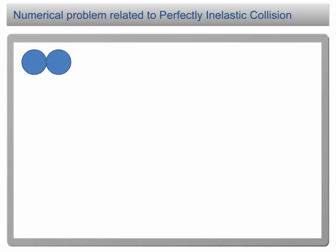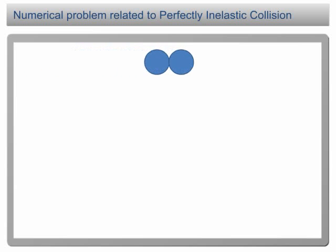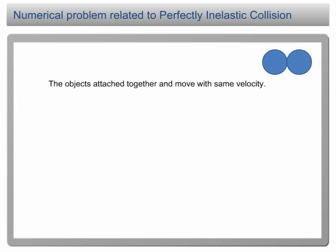Numerical problem related to perfectly inelastic collision. In a perfectly inelastic collision, the objects attach together and move with the same velocity after the collision. We call it the common velocity. Since momentum is also conserved in perfectly inelastic collision, we can use the equations of conservation of momentum to solve the problems.